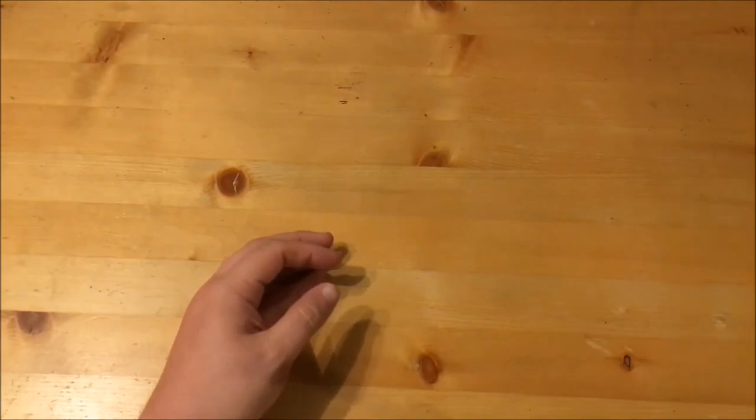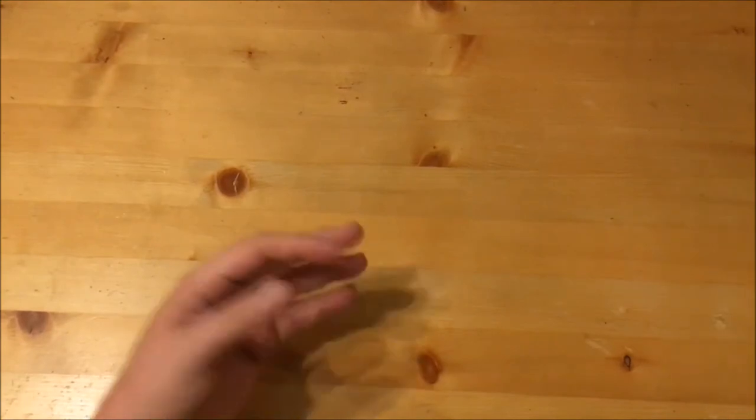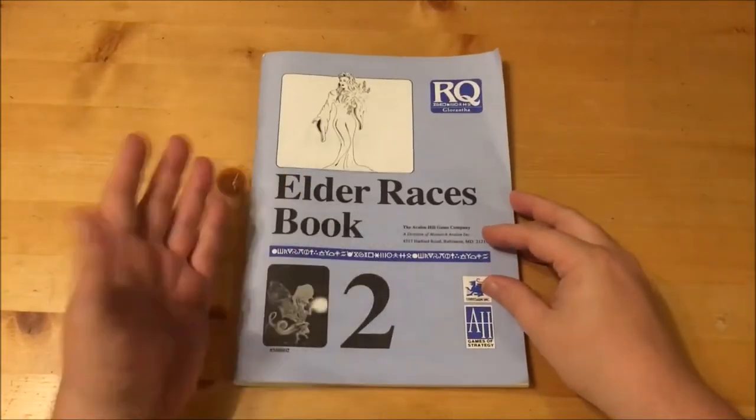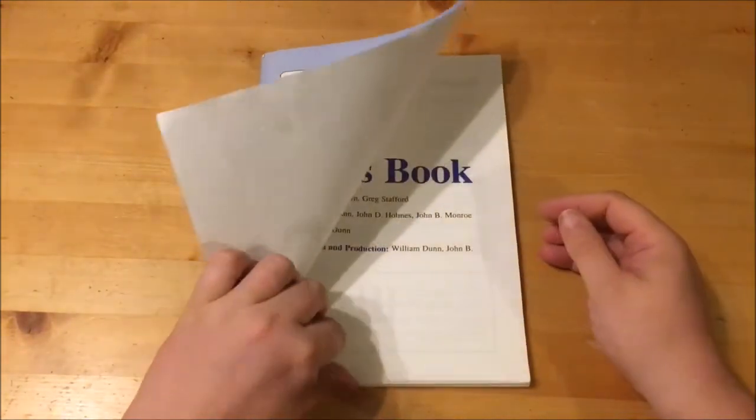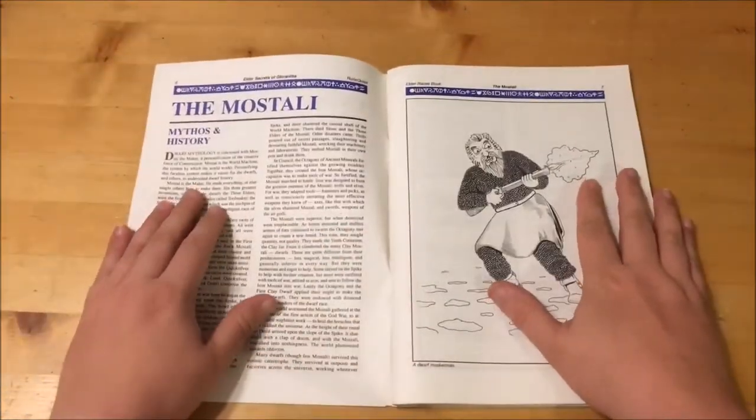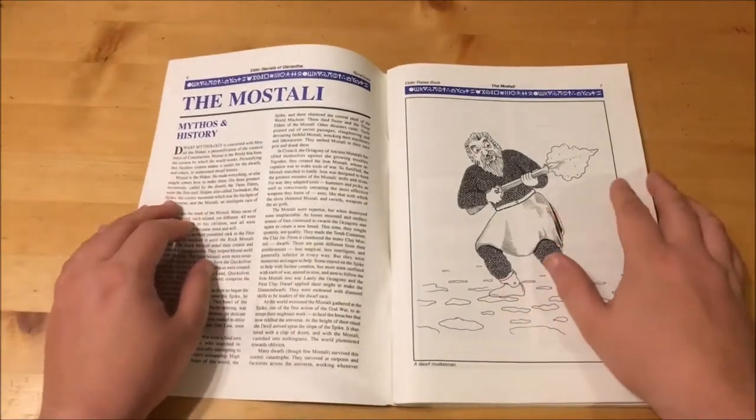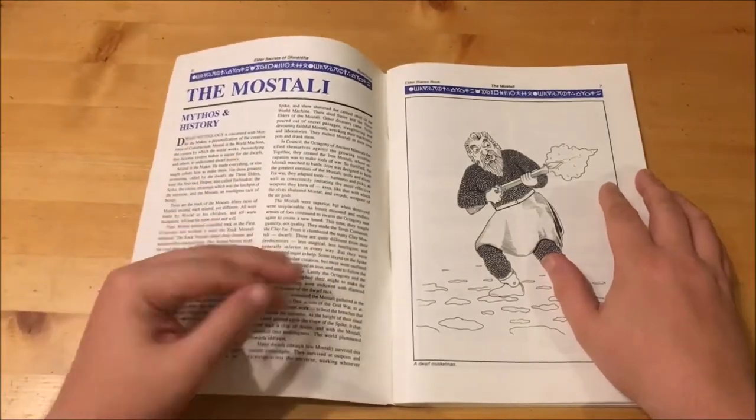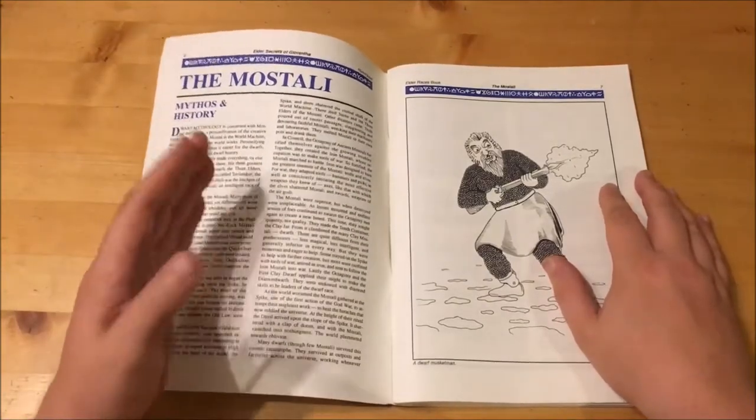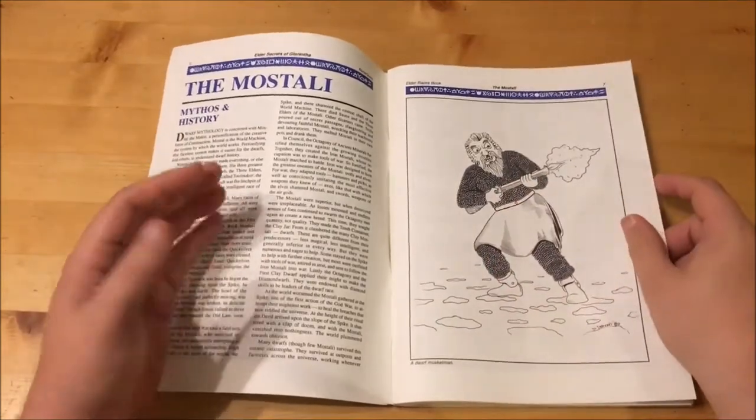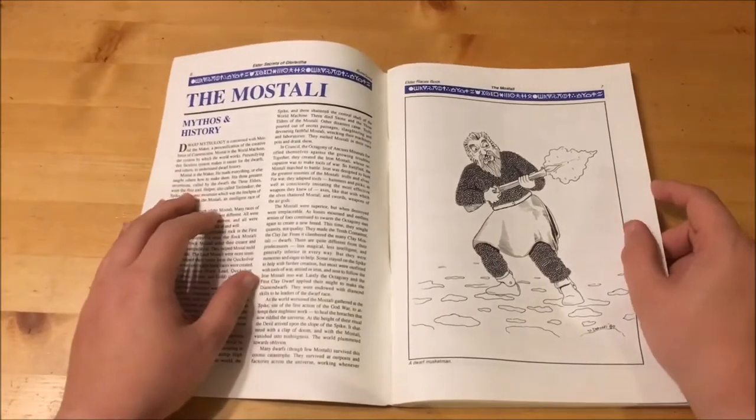Okay, on to book two. This book concerns itself with the races of Glorantha and divides itself into five sections: the Mostali, the Eldreiai Army, the Uz, the Lesser Elder Races and Scenario Outlines. Okay, first up is the Mostali or Dwarfs. The Mostali are the creation of Mostal the Maker. Mostal is the world machine, the system by which the world works. Mostal created the first Rock Mostali in Godtime. This was followed by the Lead, Quicksilver, Copper, Tin, Brass, Silver and Gold Mostali. When Umath separated the sky and the Earth, the world machine was broken. The Mostali worked tirelessly as a race to restore the world machine to full working order.